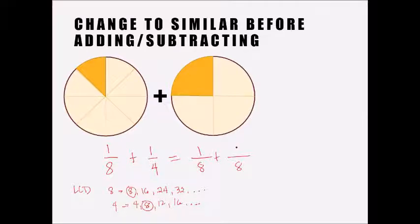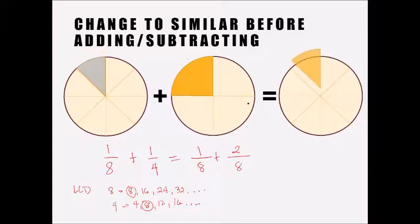Now just add our numerators. As shown in the illustrative example, the one-eighth and the two slices combined become three-eighths when we add them together.